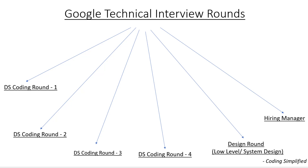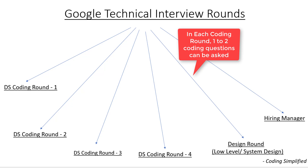You can expect three or four coding rounds. If you are a fresher, almost all rounds will be coding rounds, plus one hiring manager round with behavioral questions. If you have three to four years of experience, most rounds will still be data structure coding rounds, so you need to be well proficient in that.